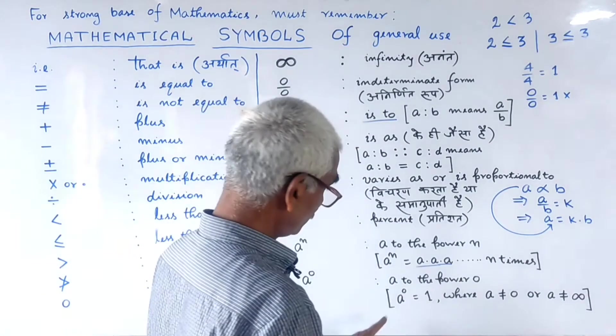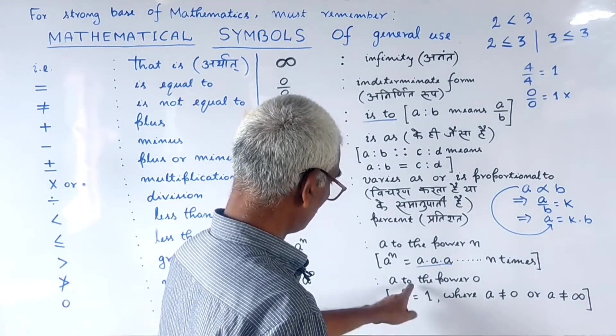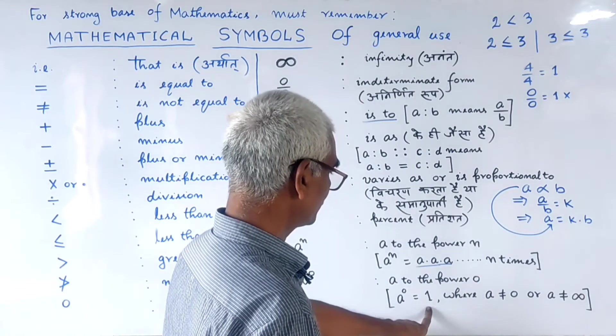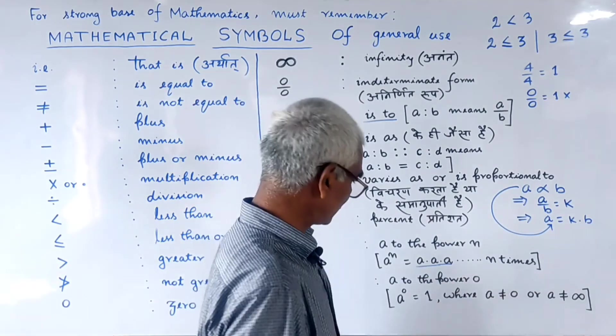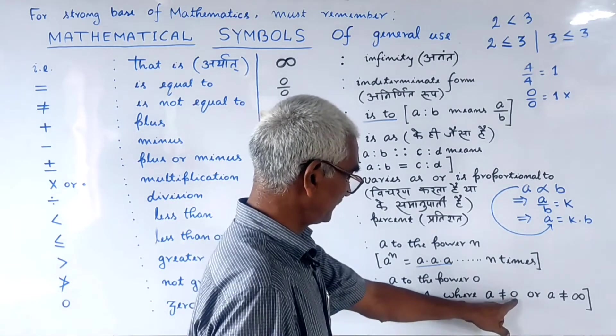So this formula is: A to the power 0 is equal to 1. The rule is that the base A should not be 0 or infinity.